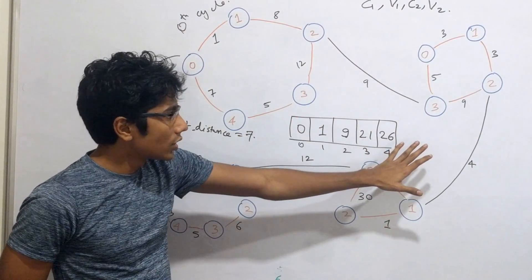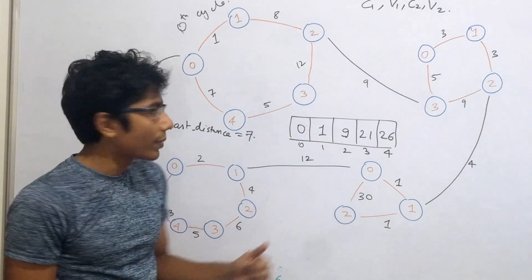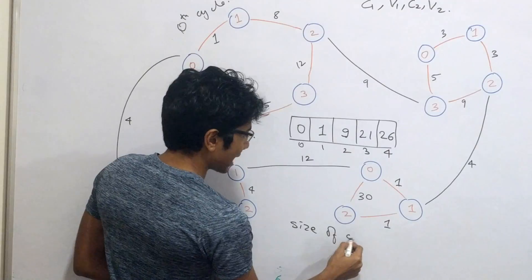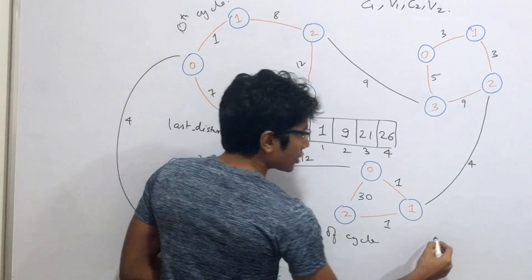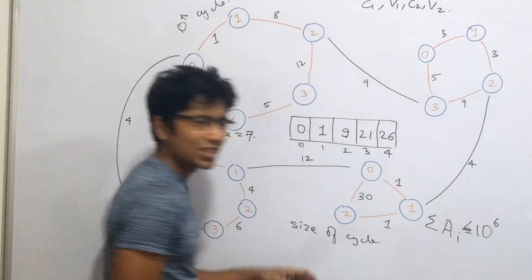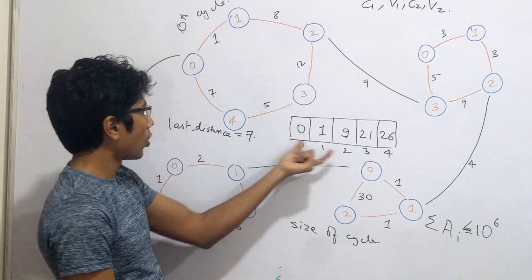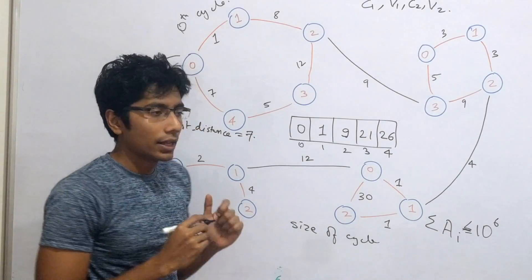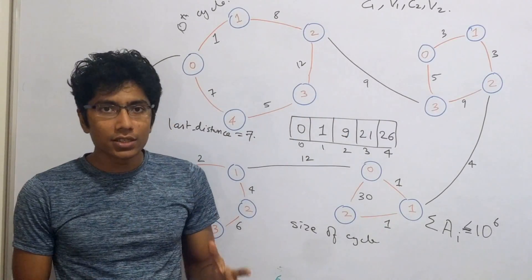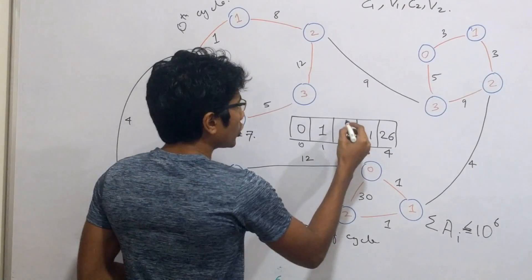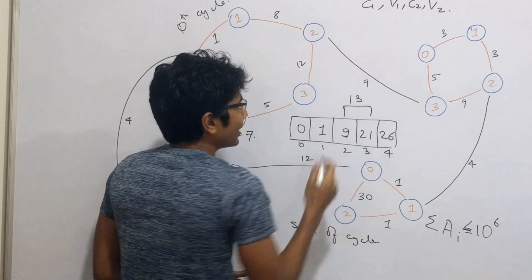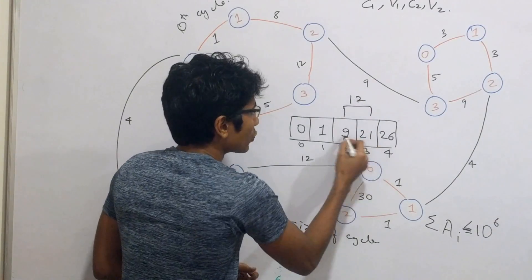For all n cycles, you have such prefix sum arrays, so you'll have n prefix sum arrays. The pre-computing time per cycle is proportional to its size, and there's a constraint that the sum of all a_i does not exceed 10^6, so pre-computation is within the time complexity limit. With this, you can move from one node to another in the same cycle very fast — O(1). For example, from node 2 to node 3: 21 minus 9 gives you 12. Or from 3 to 1: prefix[1] plus total minus prefix[3], which is around 20.